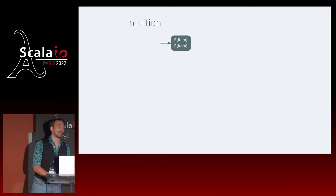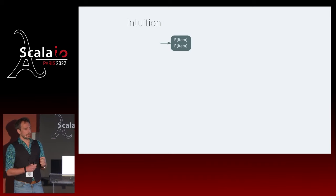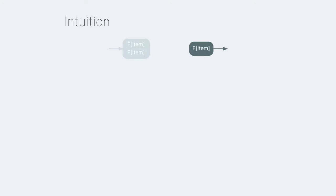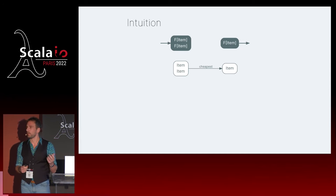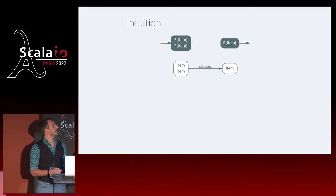As before, we start drawing. We have two F of items as input, our desired output is one F of item, and the tool we have is the function cheapest. We want that diagram to commute. This looks a lot like the diagram we had earlier - we could say we want lift2 that takes a function with two parameters and lifts it into F. That's correct and would work, but my next question would be what about three parameters? We could be doing that for a while. We're going to try to find a generic solution instead.